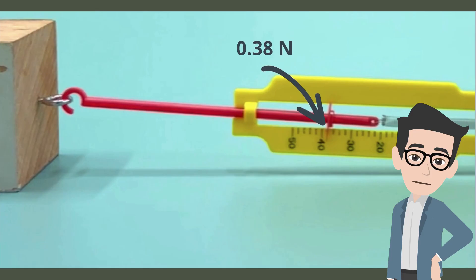The reading on the spring scale shows 0.38 Newtons. Yes! This means that 0.38 Newtons of force is needed to move the wooden block.